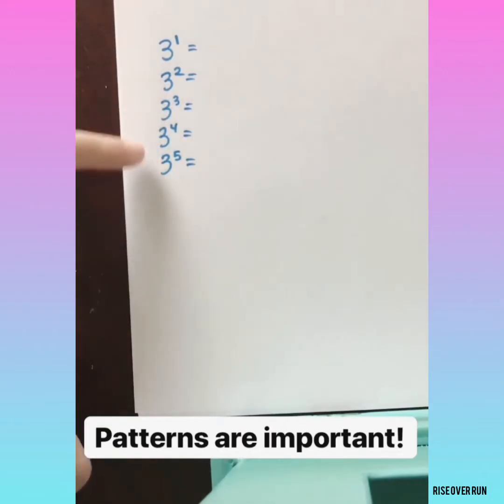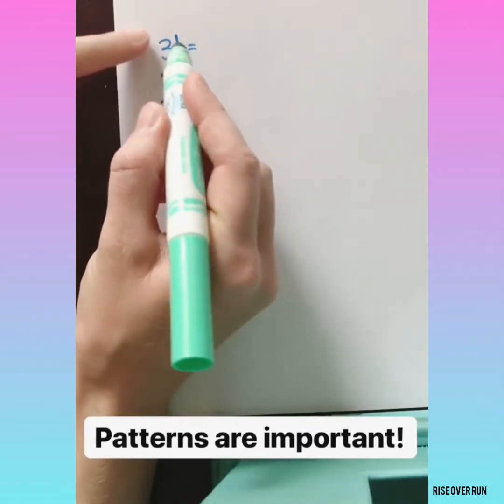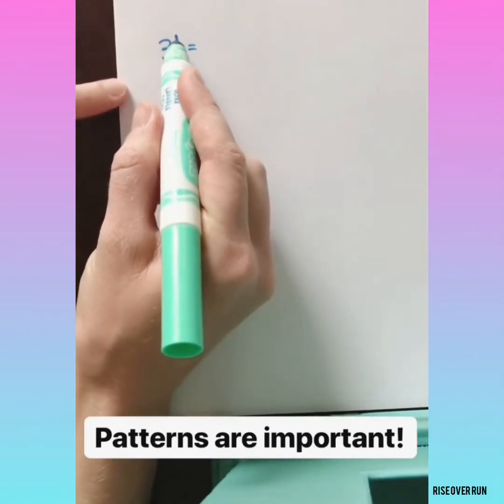So first let's look at these 3's raised to different powers. The big number is called the base, the small number is the exponent or the power.